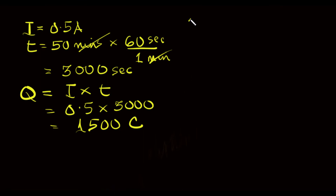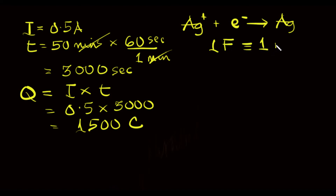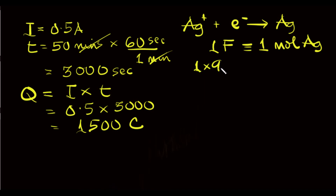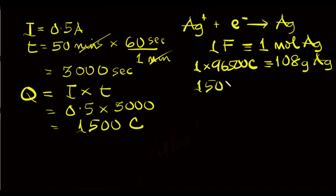From the reduction half equation for silver ions, one Faraday will deposit one mole of silver. One Faraday is 96,500 coulombs, while one mole of silver is 108 grams. Since we're asked to calculate the masses of silver and copper metals deposited, this means that 1 × 96,500 coulombs will deposit 108 grams of silver. So, 1500 coulombs will deposit a proportional mass of silver.